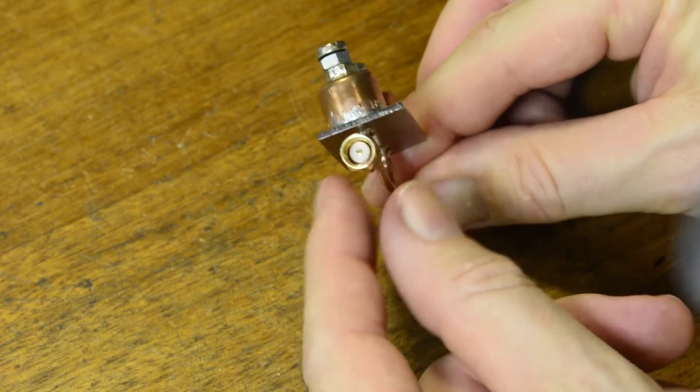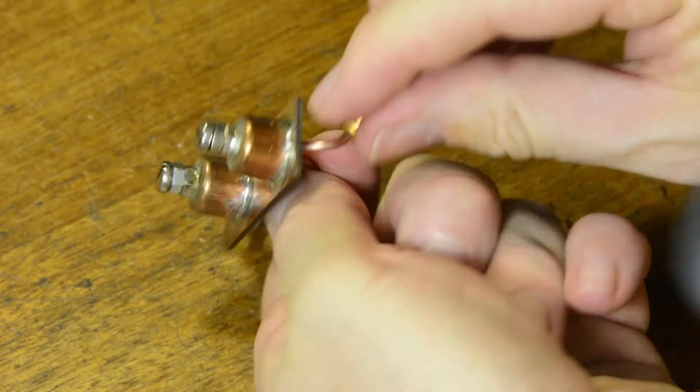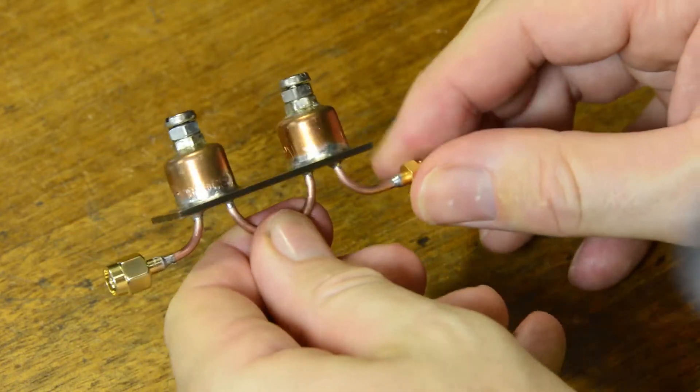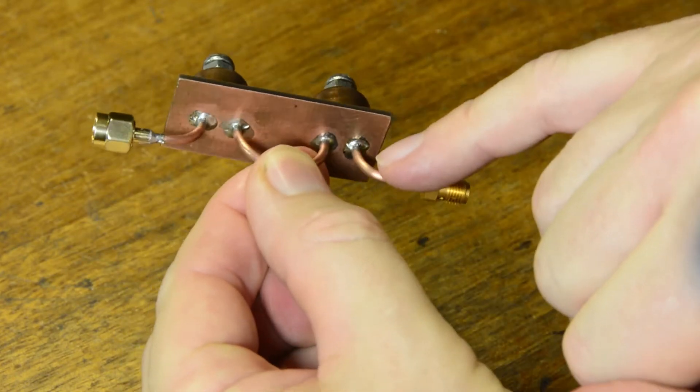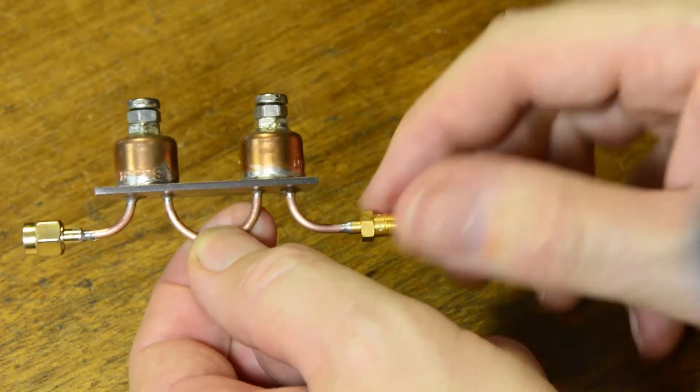On one end we've got a male SMA connector and on the other we've got a female SMA jack so it becomes an inline device. You can see the 085 is soldered on this side of the circuit board but also more importantly it's soldered on the other side of the circuit board.